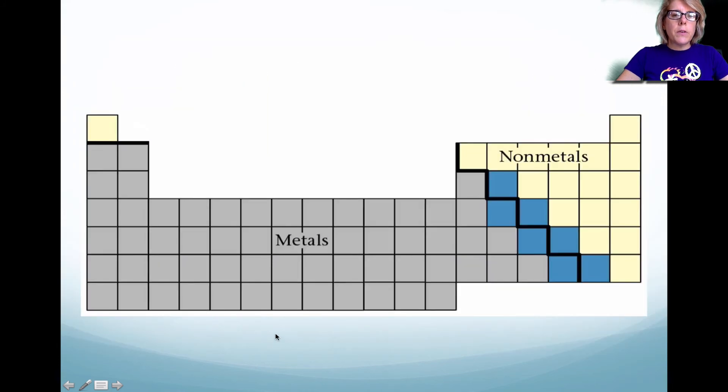Okay. Here's another version of the periodic table where we see predominantly the periodic table is made up of metals. So metals make up the largest portion of the periodic table. The deep blue section is the metalloids. And then lastly, the non-metals are in yellow.